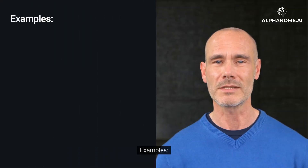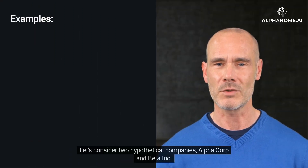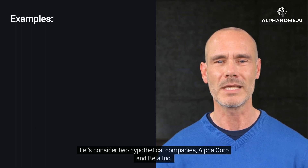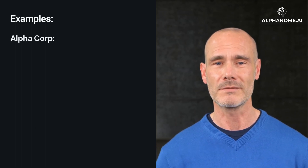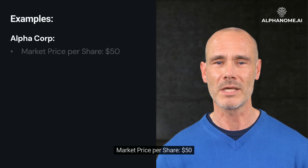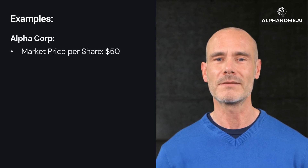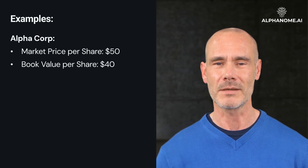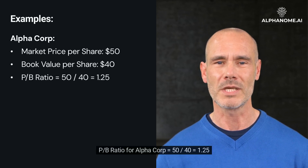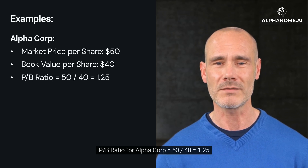Let's consider two hypothetical companies: AlphaCorp and BetaInc. AlphaCorp has a market price per share of $50 and a book value per share of $40. P/B Ratio for AlphaCorp = 50 ÷ 40 = 1.25.